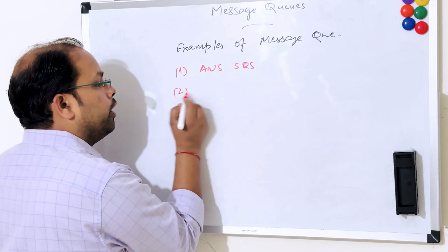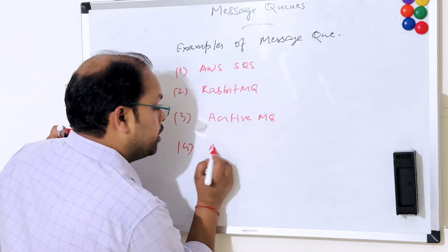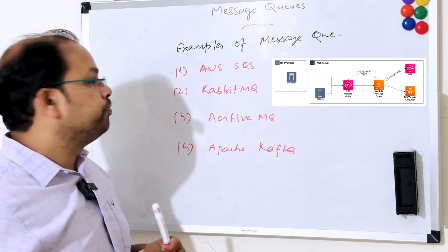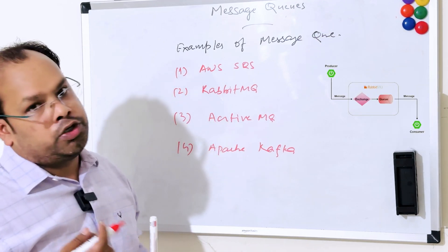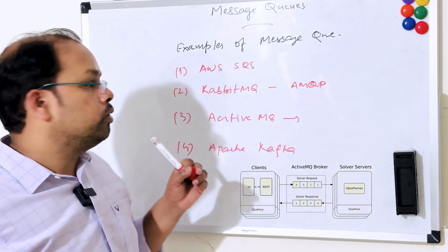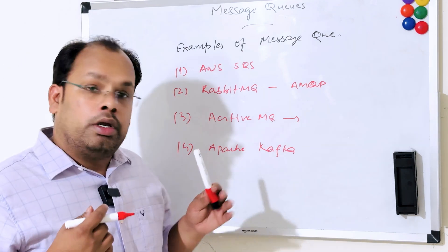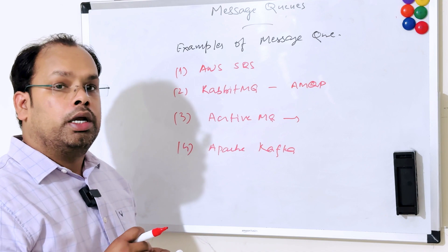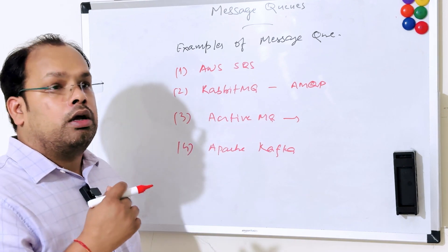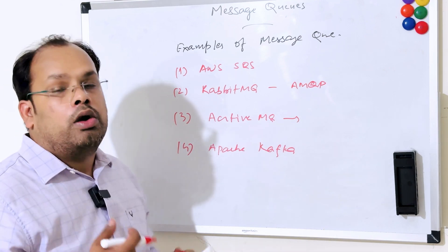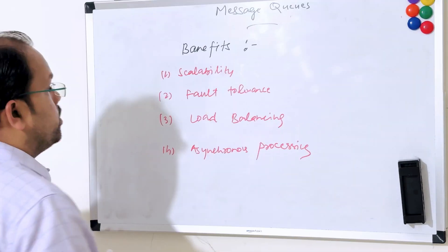Examples of message queues: we have AWS SQS, RabbitMQ, and ActiveMQ — which is also open source and written in Java. Apache Kafka is also open source and is used for very highly data-intensive, streaming purposes. For example, Twitter is a great use case: somebody does a post and a lot of likes and comments happen in real time, so we can use Apache Kafka there.